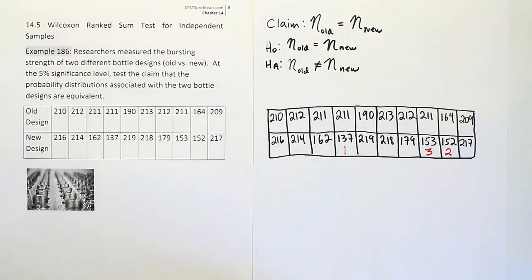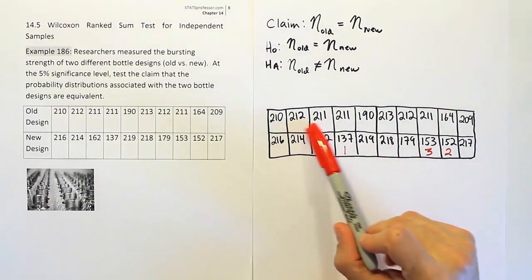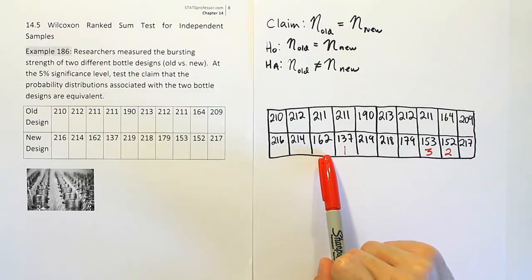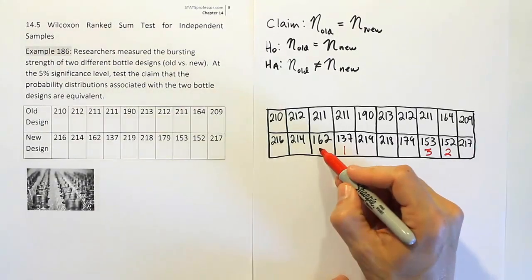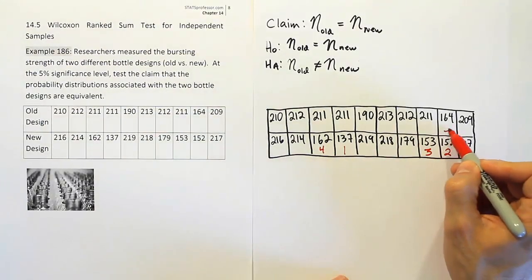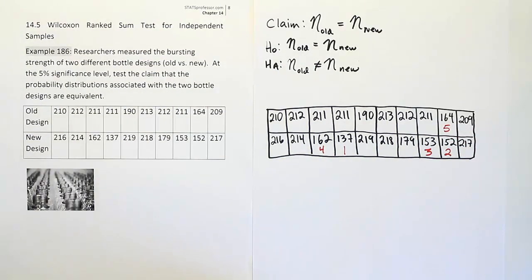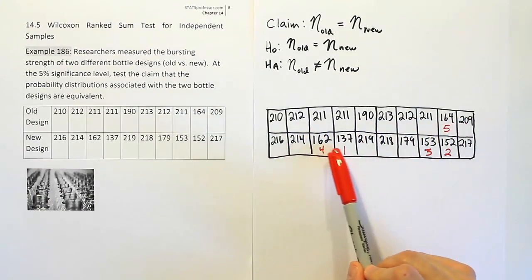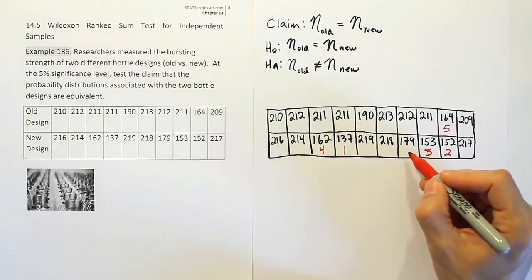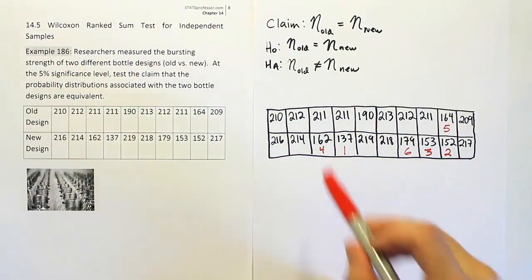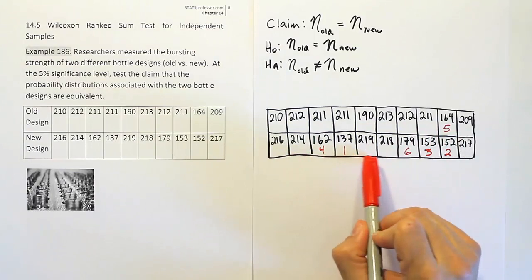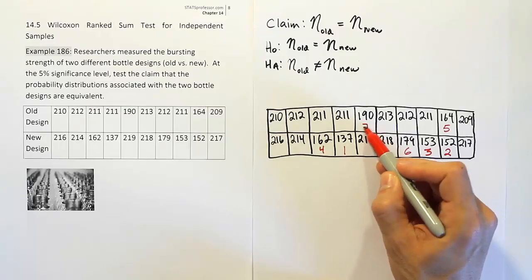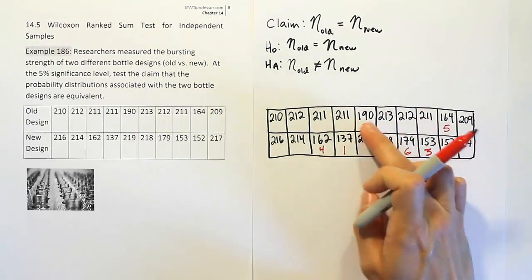Continuing through the 160s: 162 gets rank 4 and 164 gets rank 5. Moving into the 170s, there's one value in the second row, which gets rank 6. There are no values in the 180s, but there is a 190, which gets rank 7. So far we have ranks 1 through 7 assigned.